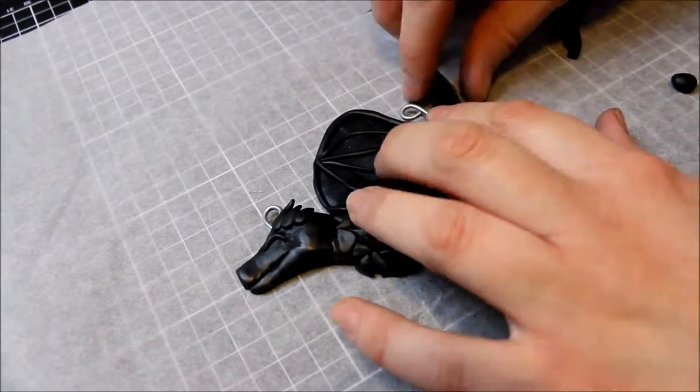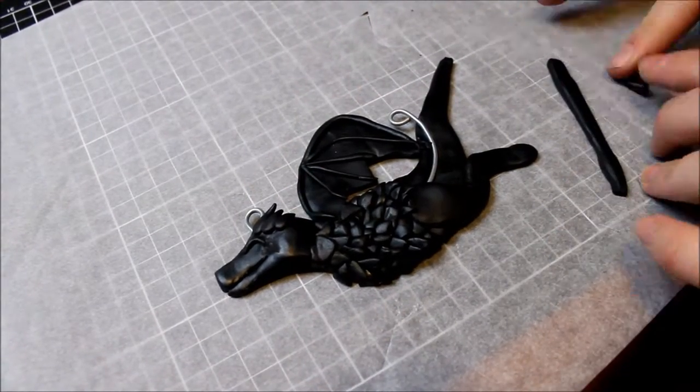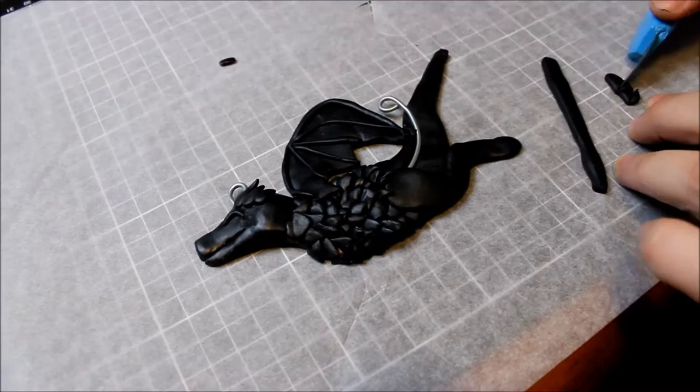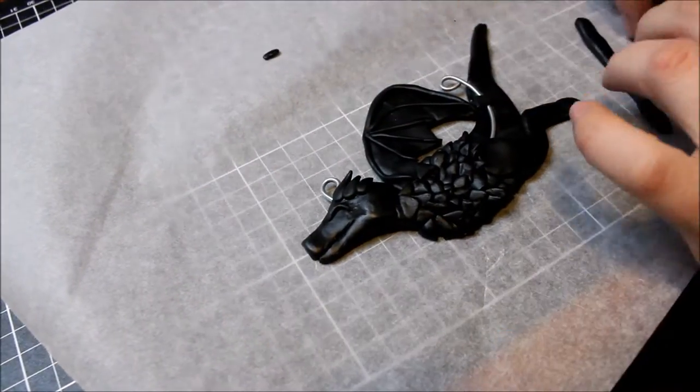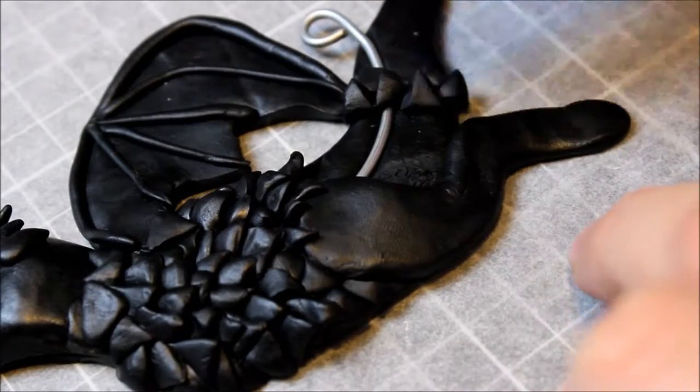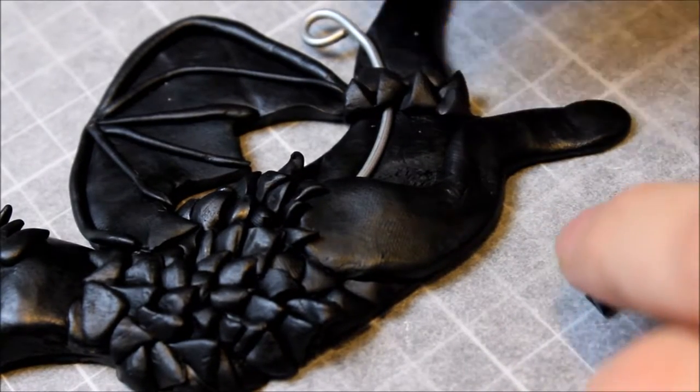I roughly shaped his tail and played around with that. A bit later in the video I'll show you how I secured that tail more by adding another support system. Then I cut some more little triangles and covered the tail up to where his hind leg meets the back.